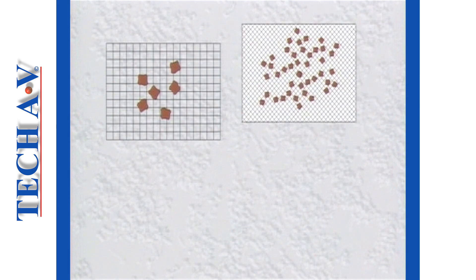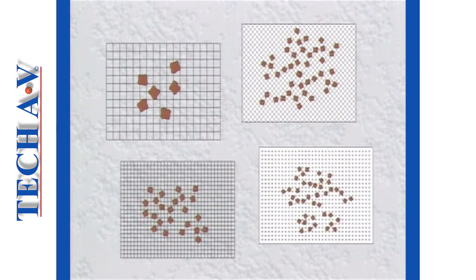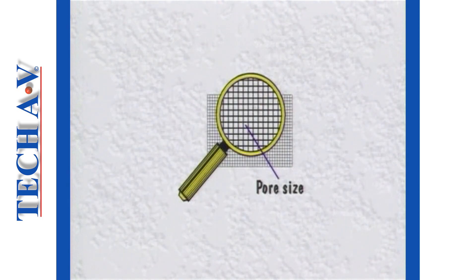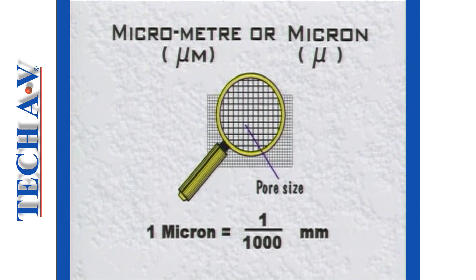We next describe the subject of micron rating, which is, in effect, all to do with the size of dirt particles and the size of the pores in various filter materials. Pore sizes are usually described in terms of micrometers or microns. A micron is equal to one-thousandth part of a millimeter.